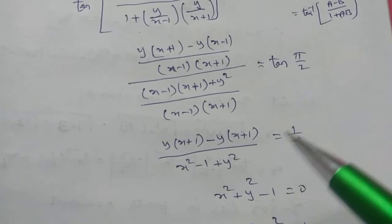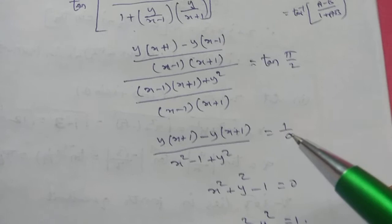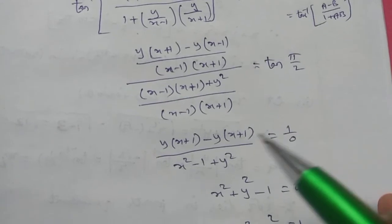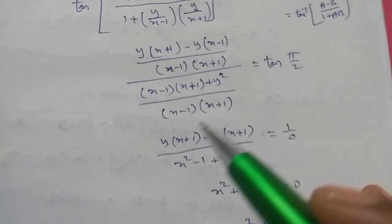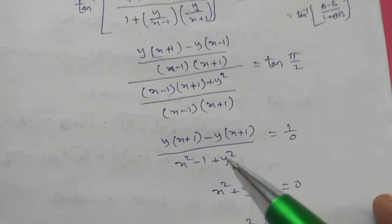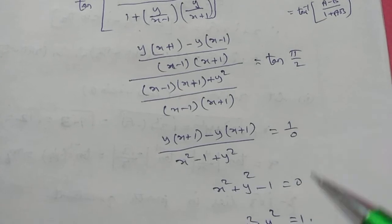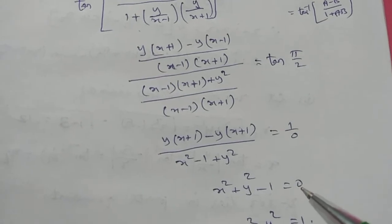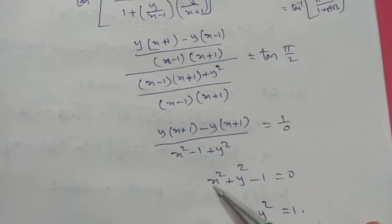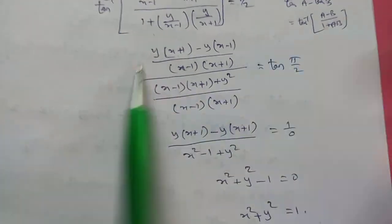Tan 90 is undefined, which means the value is 1 divided by 0. So by cross multiplication, the denominator equals 0: x squared plus y squared minus 1 equals 0. Therefore, x squared plus y squared equals 1, which is what we needed to show.